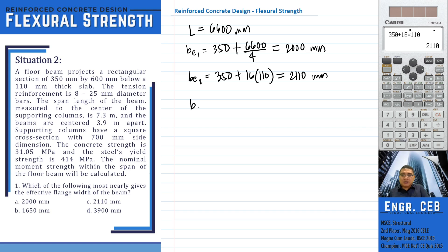For the last formula, according to the problem, the beams are centered 3.9 meters apart, so this is 3,900 millimeters. The governing flange width or the effective flange width is the minimum of the three. The minimum of the three is the 2,000 millimeter. Therefore, the answer is letter A.